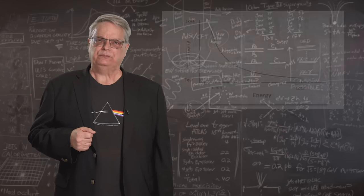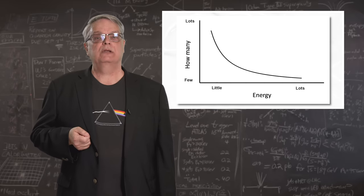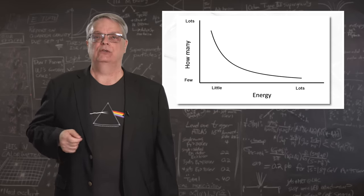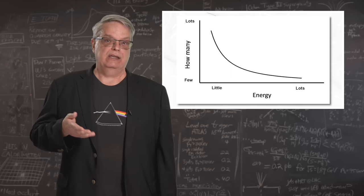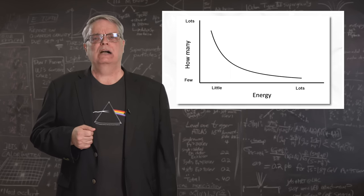So this is how it works. Suppose this graph represents how many cosmic ray muons exist at each energy. Where the graph is high, there are more, and where it is low, there are fewer.